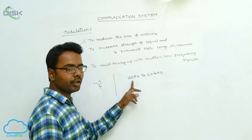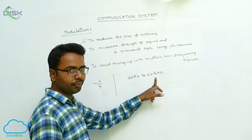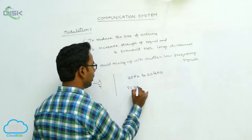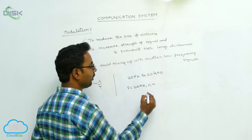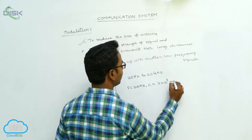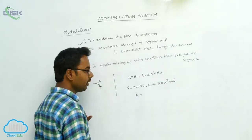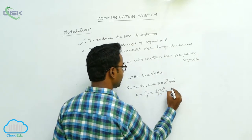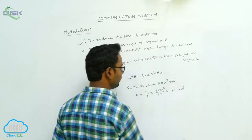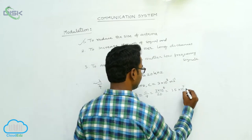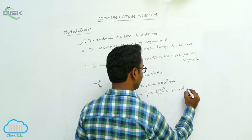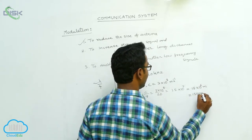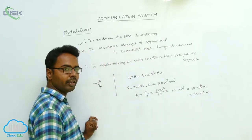Audio signals have a frequency range from 20 Hz to 20 kHz. To transmit an electromagnetic wave of frequency 20 Hz, given that frequency is 20 Hz and the speed of electromagnetic wave is 3×10^8 m/s, we calculate its wavelength: lambda = C/nu = 3×10^8 / 20 = 1.5×10^7 m, which is approximately 15×10^6 m or 15,000 km.